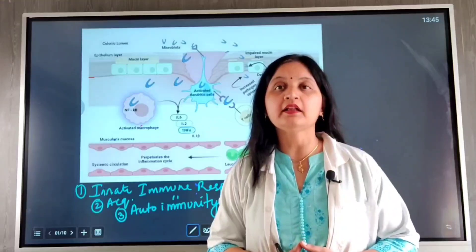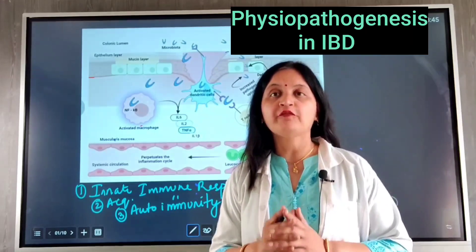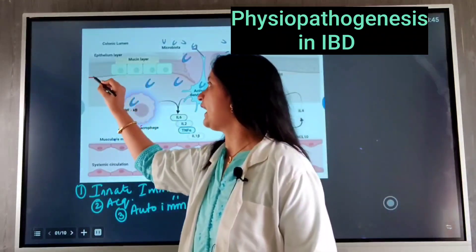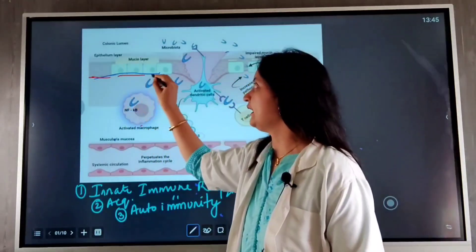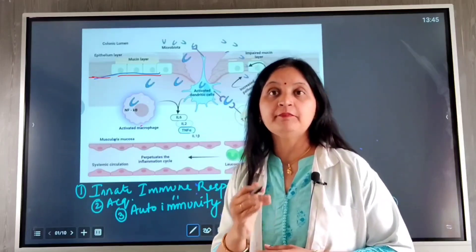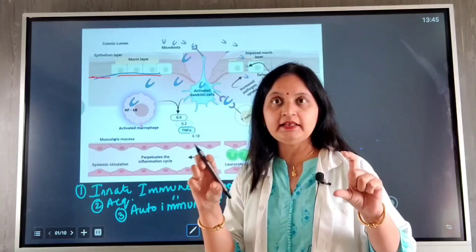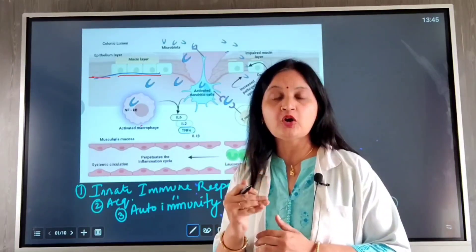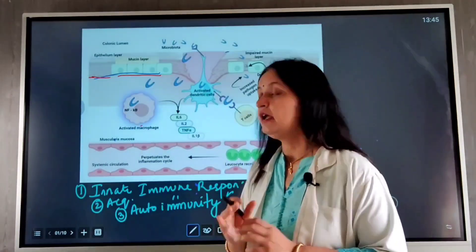To understand drug therapy for ulcerative colitis and Crohn's disease, it is important to know the physiopathogenesis of inflammatory bowel disease. The intestinal epithelial layer remains intact due to the presence of healthy gut microbiota. Beneficial microbes such as Lactobacillus help maintain the epithelial layer, preventing bacteria and toxins from entering deeper tissues and preventing inflammation.